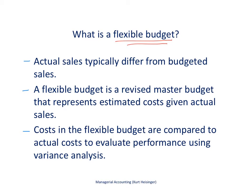The first point is that actual sales do typically differ from budgeted sales. The master budget, which we talked about in a separate video, is created before anything actually happens for that period — it's created in advance. Our master budget might show that we expect to sell 200,000 units, and it will show what we think our costs will be for producing and selling those 200,000 units.